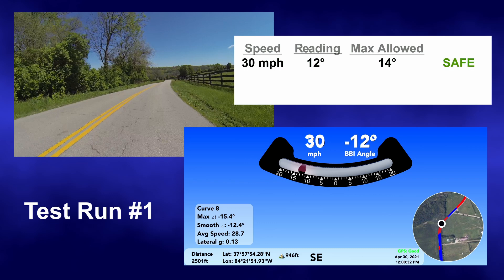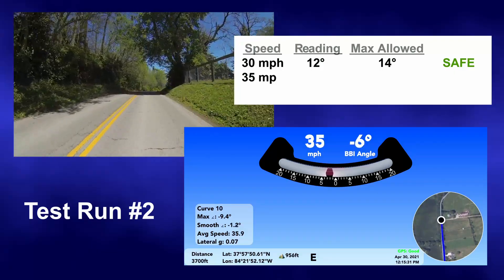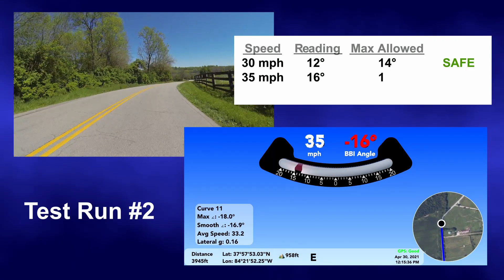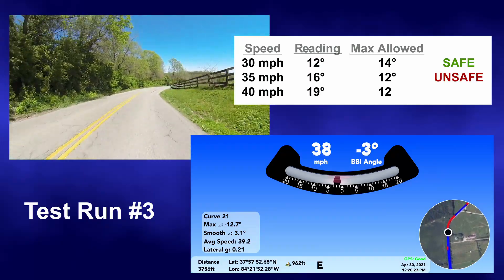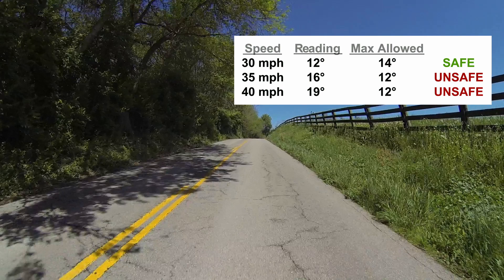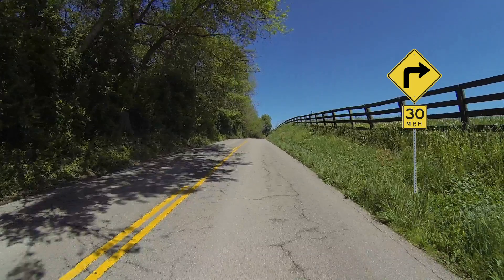The speed for each test run should be increased in five mile per hour increments. For the second test run, we'll be traveling at 35 miles per hour. This time the ball bank reading is 16 degrees — four degrees more than the maximum 12 degrees allowed for speeds of 35 or higher. The third test run is at 40 miles per hour, registering an even higher ball bank reading of 19 degrees. Since the 35 and 40 miles per hour tests both exceeded the maximum allowable 12 degrees for speeds of 35 or higher, the maximum safe speed for the curve is 30 miles per hour, and this is where the advisory speed would be set.